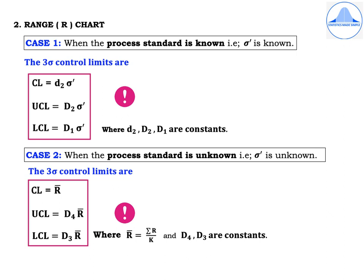For the R chart, Case 1 is when the process standard is known, i.e., sigma-dash is known. The three-sigma control limits are: CL = d₂·sigma-dash, UCL = D₂·sigma-dash, LCL = D₁·sigma-dash, where lowercase d₂, uppercase D₂, and D₁ are statistical constants.